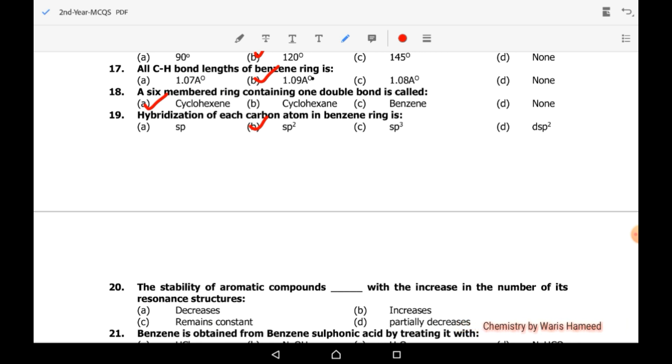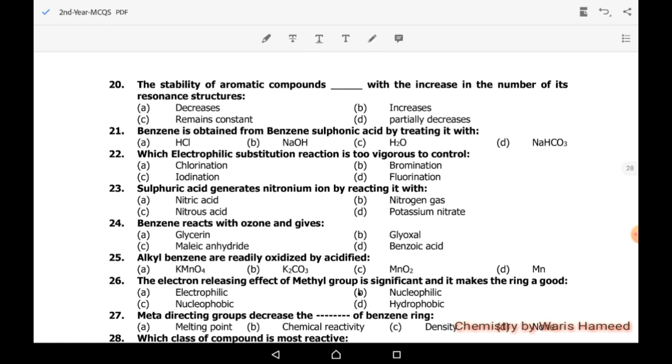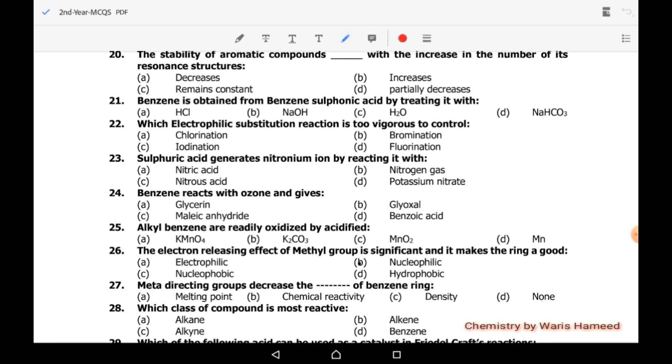The stability of aromatic compounds with the increase in the number of its resonance structures. We know that stability is directly proportional to increase in number of resonance structures, so B option is correct. As the resonance structures increase, stability also increases. Benzene is obtained from benzene sulfonic acid by treating it with water.